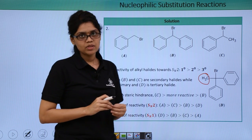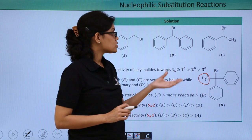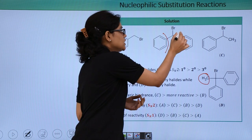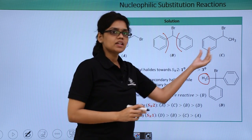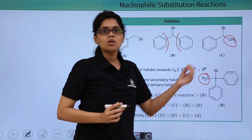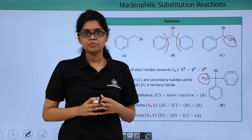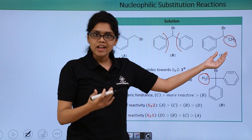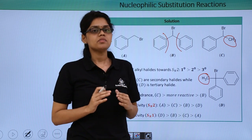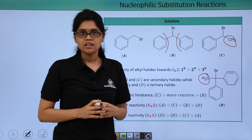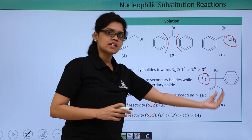Evaluating the steric situation: compound B is very much sterically hindered because it has two large phenyl groups. However, compound C has only one phenyl group and one methyl group, making it much less sterically hindered compared to compound B. For the same reason, C will be much more reactive towards SN2 reaction than B. Therefore, the final order of reactivity towards SN2 reaction is: A > C > B > D.